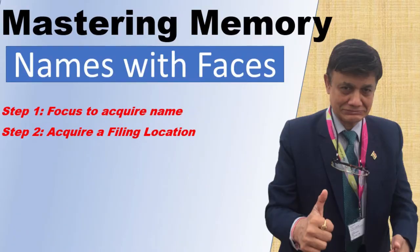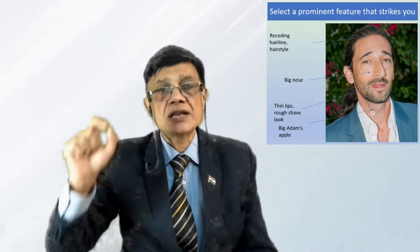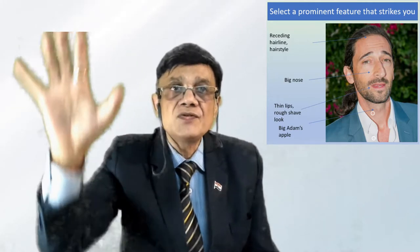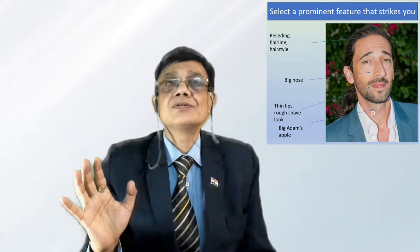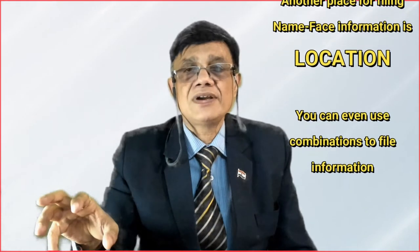The second step is to file the information. You do it in two places. First, you can store the information on the person's unique face feature — something different about their nose, hairstyle, lips, or cheekbones — and try to store the name on that unique feature. Once you get into the swing of it, you can do it very fast. Second, file it with reference to location — where you have seen the person — building a memory palace location map, noting that this person seated here has this unique name.